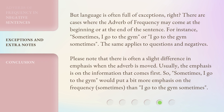But language is often full of exceptions, right? There are cases where the adverb of frequency may come at the beginning or at the end of the sentence. For instance, 'Sometimes, I go to the gym,' or 'I go to the gym sometimes.' The same applies to questions and negatives. Please note that there is often a slight difference in emphasis when the adverb is moved. Usually, the emphasis is on the information that comes first. So 'Sometimes, I go to the gym' would put a bit more emphasis on the frequency — 'sometimes' — than 'I go to the gym sometimes.'